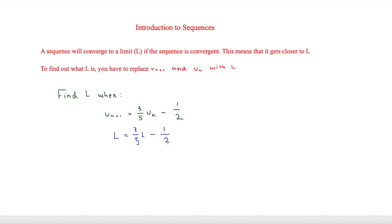Therefore, now we just have to rearrange and that means that we can get all of the l's on one side. So we're taking l minus 3 fifths l is 2 fifths l is equal to minus a half.